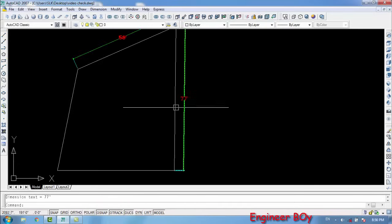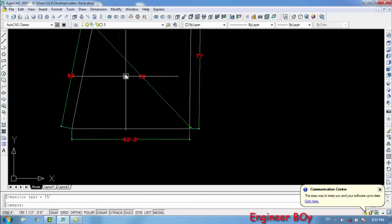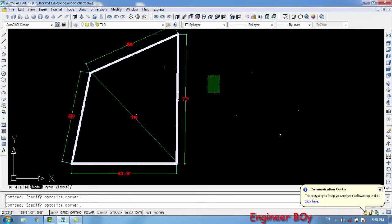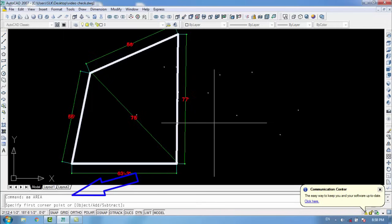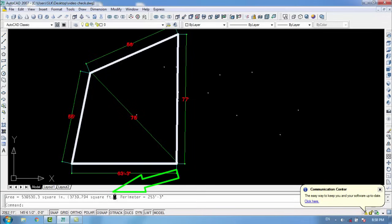We will type and enter double A in command bar, after which we'll type and enter O for object, and then we'll simply click the object or the boundary of our property. AutoCAD will show the total area of the property in the command bar. You can copy and paste it where you want.